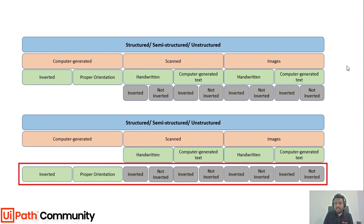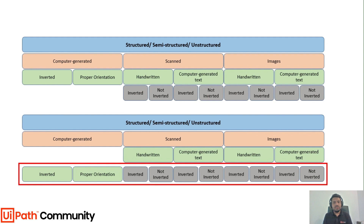Go down to the most granular level, as shown in the diagram, and capture that as your final set of variations across all types — structured, semi-structured, and unstructured. Once you have that, it's time to apply the OCR engines on top of this. This also gives you an idea of what kind of OCR engines you need — for example, if you have handwritten text, you need an OCR engine that supports it.